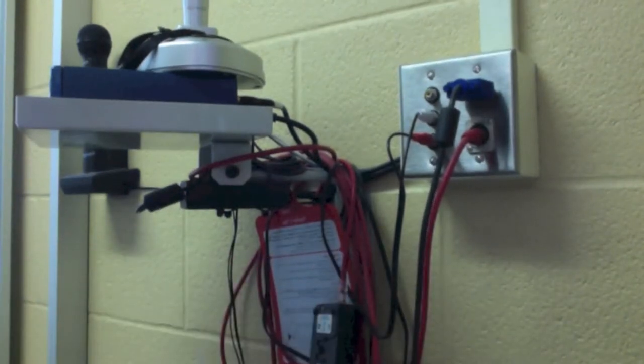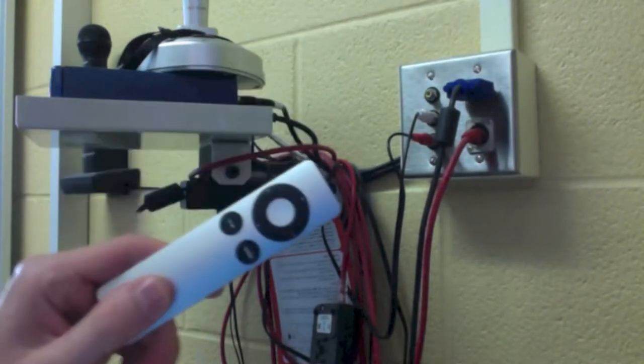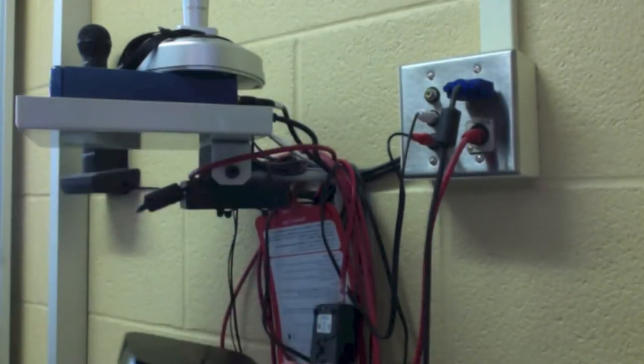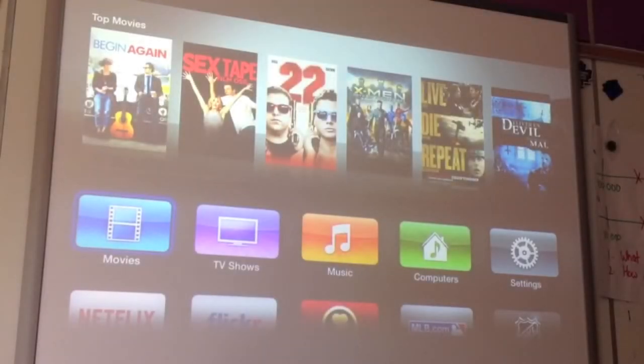Once this is all set up, we simply need to take our Apple TV remote and press menu in order to turn the box on. If all has gone well so far and you are connected to your network, you should see the Apple TV menu which looks like this.